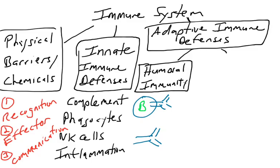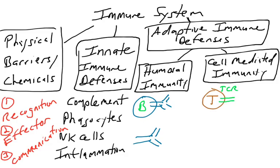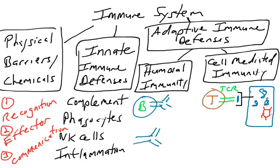Now we're going to talk about cell-mediated immunity, which involves T cells. T cells need a way to recognize the pathogen, so we'll talk about the T cell receptor. They're a little special in how they recognize a pathogen, because they actually recognize small pieces of protein called peptides that are presented on the surface of a cell. So T cells actually talk to other cells and look at the surface of other cells in order to find their matching antigens.